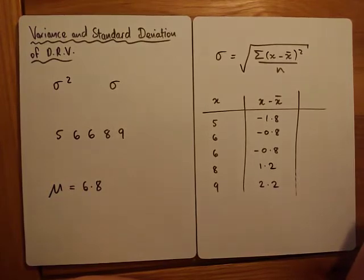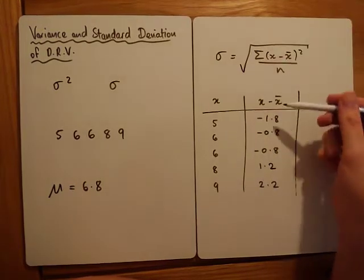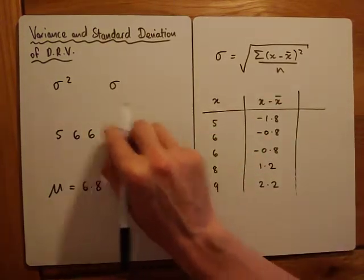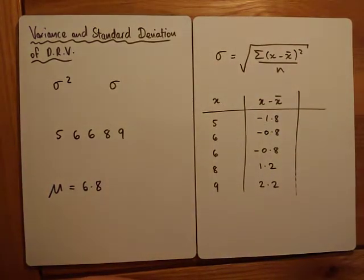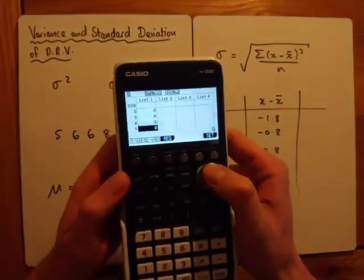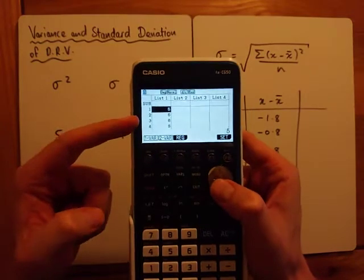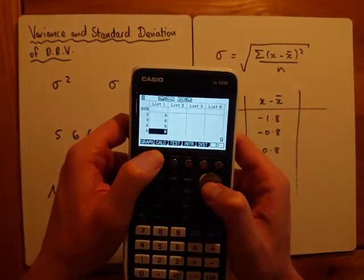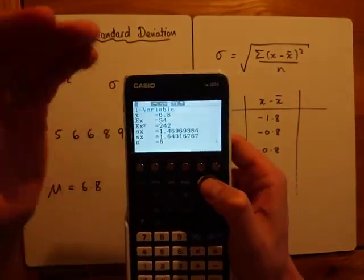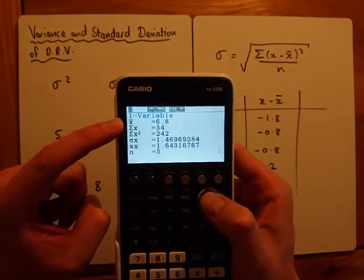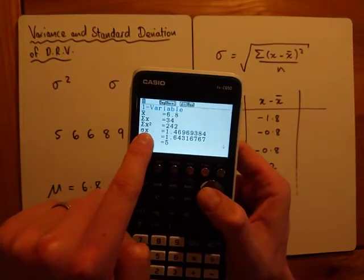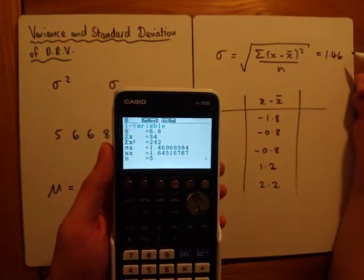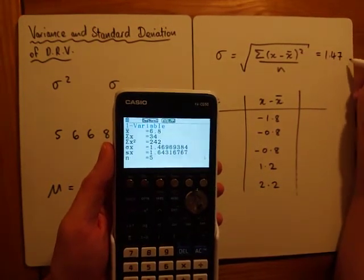We square the deviations, add them up, divide by how many there are — in this case five — and then take the square root. That avoids the problem with negatives. Using the graphical calculator: go to Menu, Stats, enter the list 5, 6, 6, 8, 9, then Calc, One Variable. It confirms the mean x-bar is 6.8 and the standard deviation sigma-x is approximately 1.47.